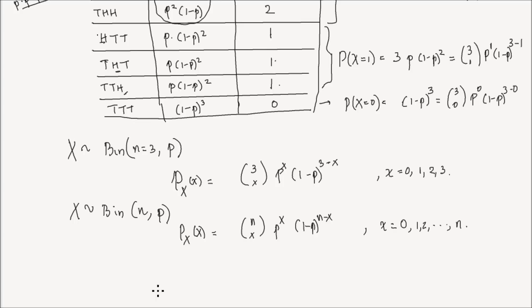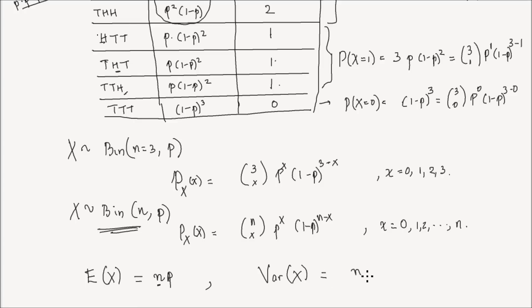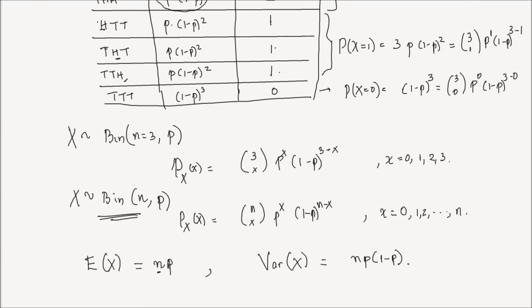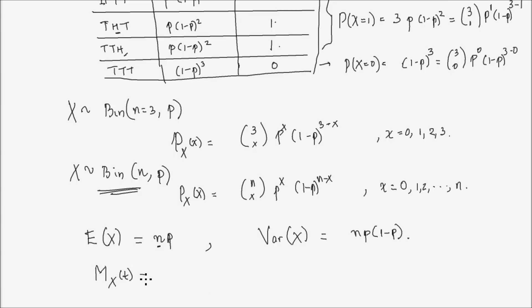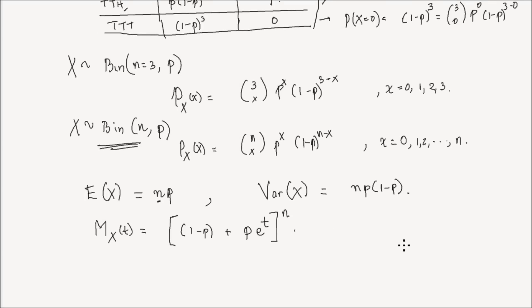In the second part of this lesson, we're going to see that the expected value of x equals n times p — the number of trials times the probability of success. The variance of x equals n times p times 1 minus p. And the moment generating function mx(t) equals 1 minus p plus p times e to the power of t, the whole thing to the power of n. I'll start with the MGF and use the MGF technique to find the first and second moments and the variance.